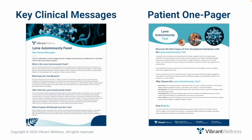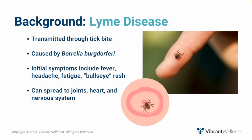The Lyme Autoimmunity Panel measures antibody levels to 11 human antigens known to trigger the autoimmune conditions Lyme arthritis, Lyme carditis, and Lyme neuroborreliosis due to molecular mimicry. Lyme disease is a vector-borne illness primarily transmitted to humans through the bite of infected ticks, caused by the bacterium Borrelia burgdorferi and, less commonly, Borrelia mayonii. Initial symptoms often include fever, headache, fatigue, and the characteristic skin rash erythema migrans, also known as the bullseye rash. If left untreated, the infection can spread to the joints, heart, and nervous system, leading to more severe and chronic health problems.